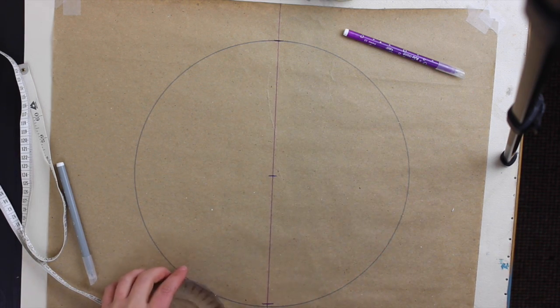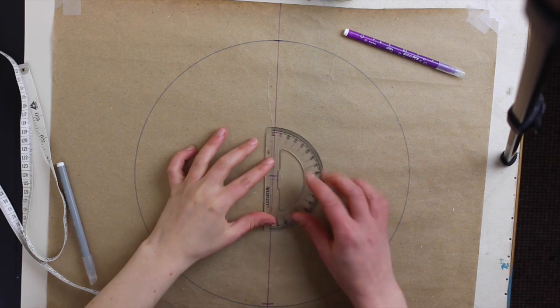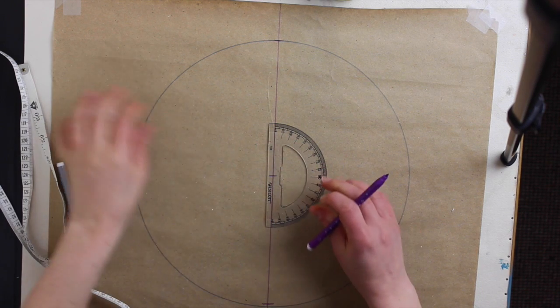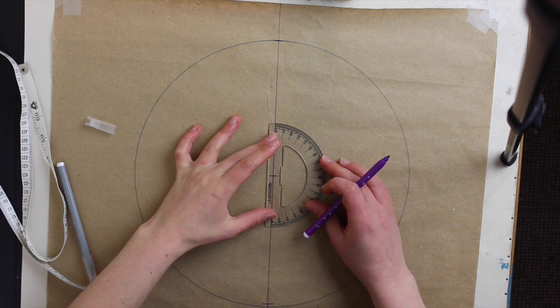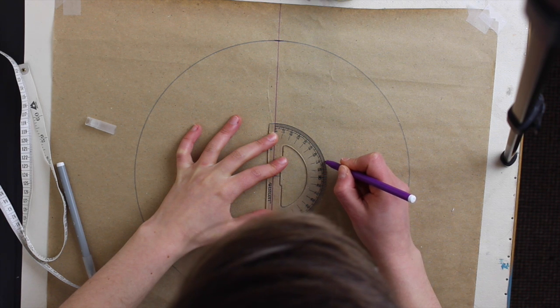Now take your protractor and place it along the center front. That here is your first point. Make sure it's all centered and then you're going to put a mark at the 72-degree mark.